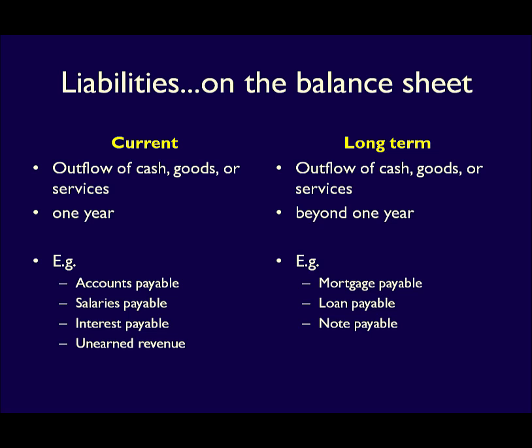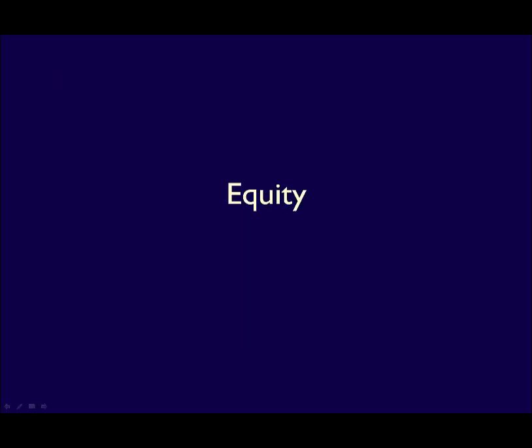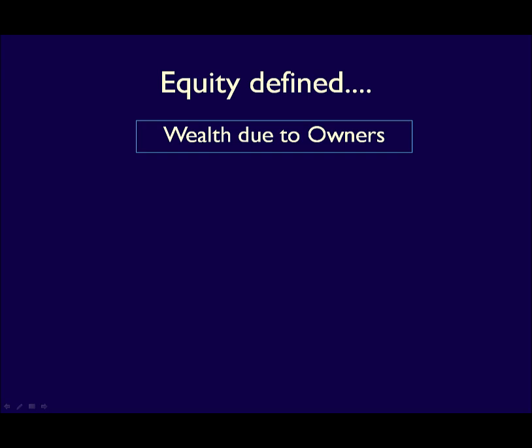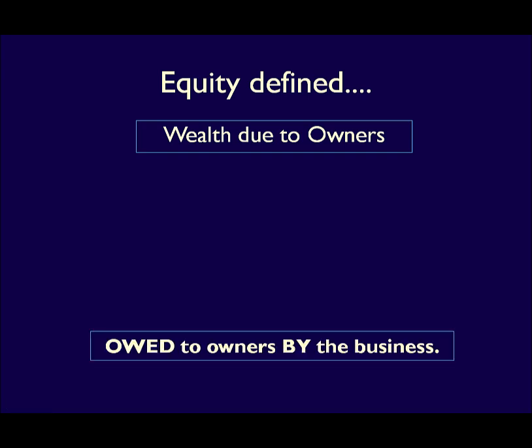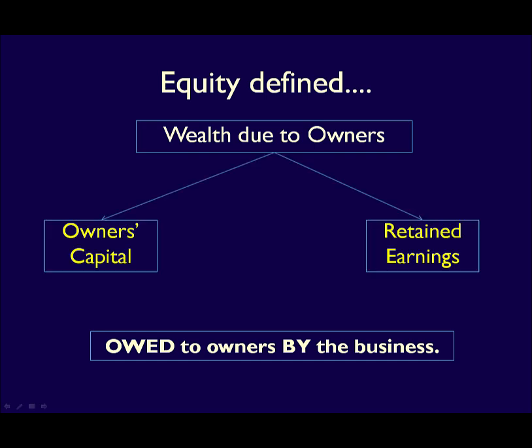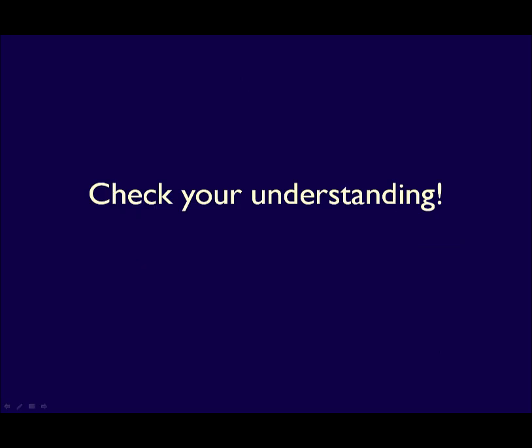That's it for liabilities — there are only two subcategories. Equity has already been defined when completing the statement of retained earnings. As a reminder, equity is owed to the owners by the business and is made up of two accounts: owner's capital and retained earnings. It answers the question: what part of the business is financed by the owners? Equity has no subcategories.